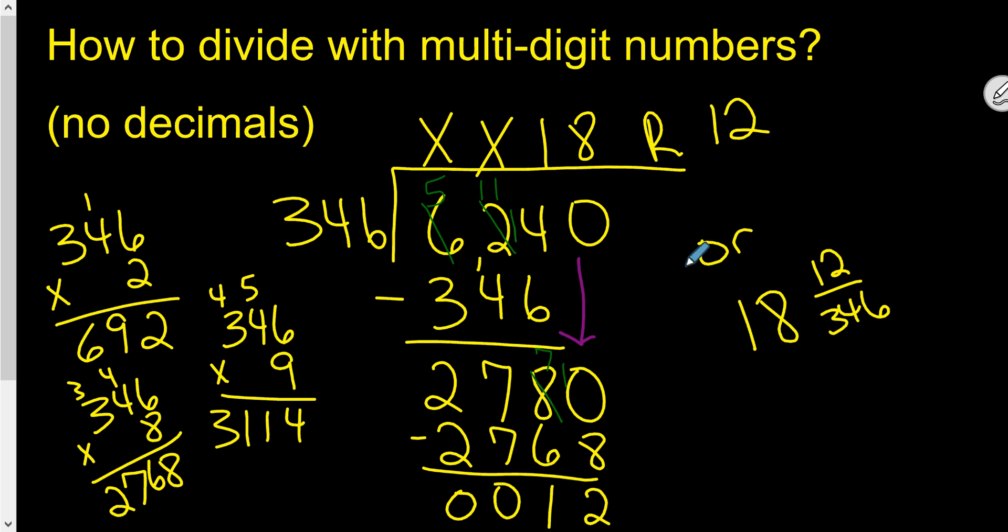Or you could make it into a mixed number, 18, and then this 12 would be the top of your fraction, and your outside number over here would be 346. They're both even numbers. You'd have to go and simplify it. We're not going to worry about that right now, though.